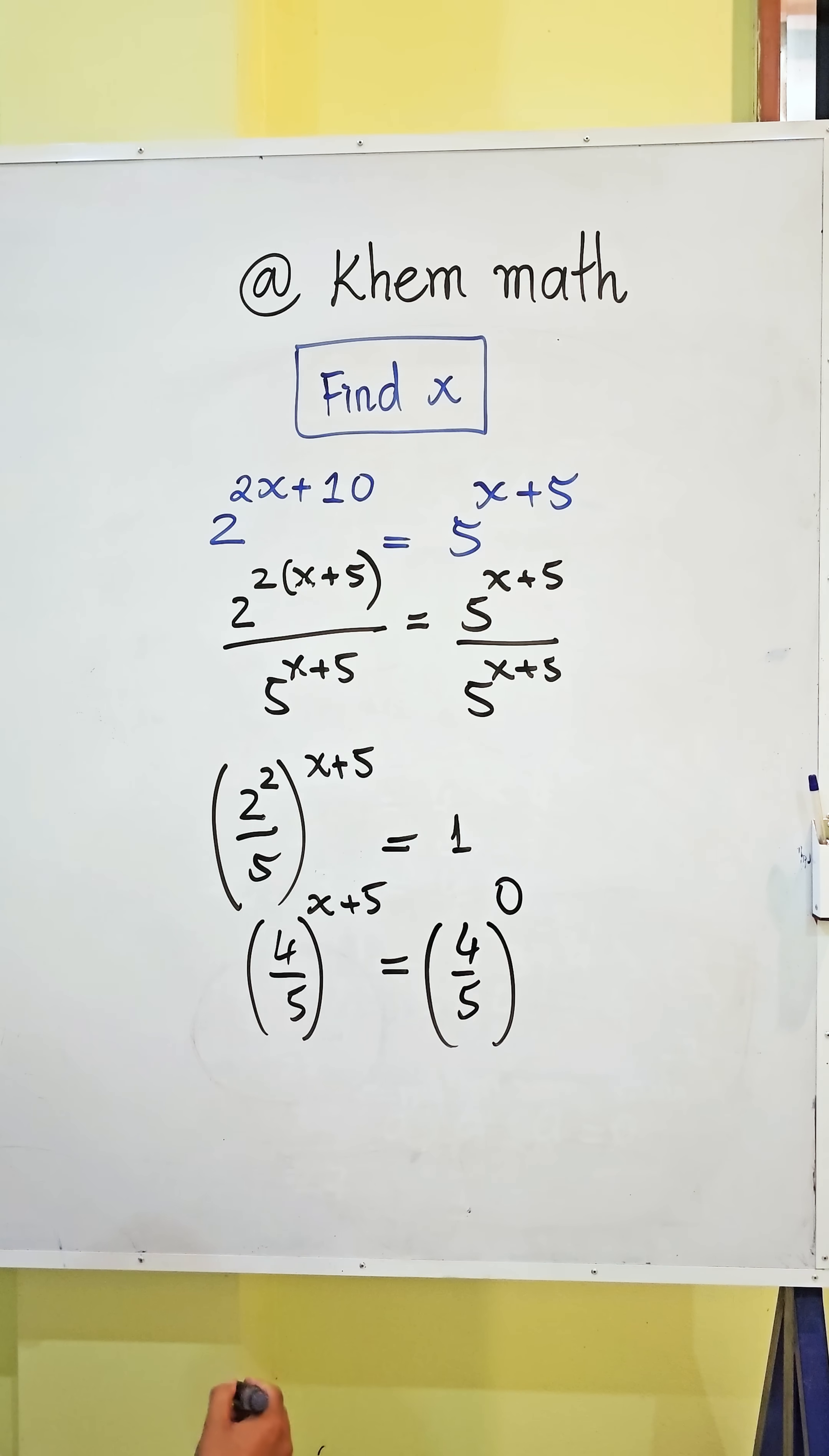We get x plus 5 equals 0, and therefore x equals negative 5. That's our answer.